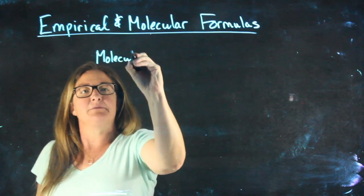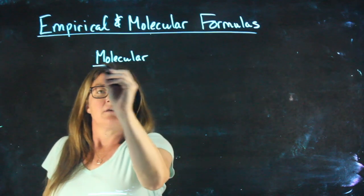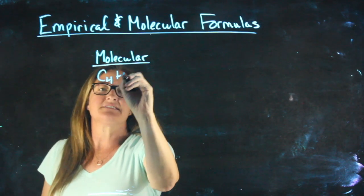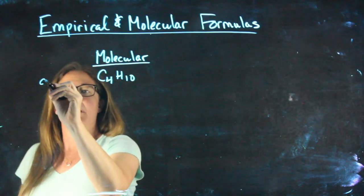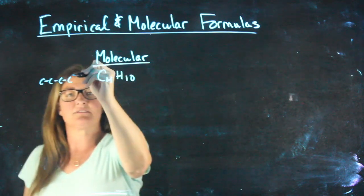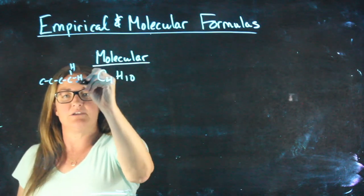So for example, the molecular formula for butane is C4H10, meaning in one molecule of butane there are literally 4 carbons and 10 hydrogens.